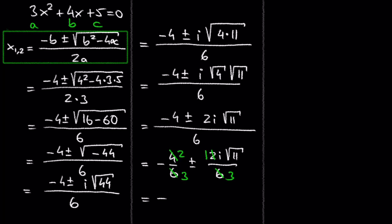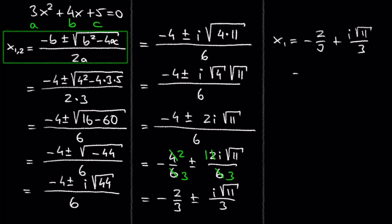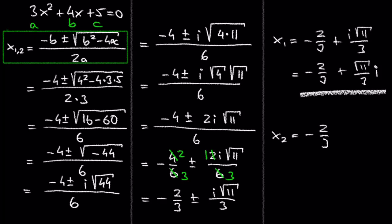So we get negative 2 over 3, plus or minus i times the square root of 11 over 3. The first solution is negative 2/3 plus i times the square root of 11 over 3, which we can also write as negative 2/3 plus (√11/3)i. Our second solution is negative 2/3 minus i times the square root of 11 over 3, which we can also write as negative 2/3 minus (√11/3)i.